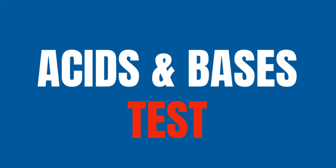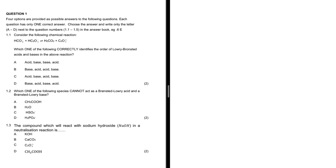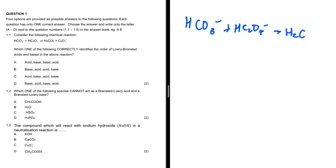Which one of the following correctly identifies the order of Brønsted-Lowry acids and bases in the above reaction? Our reaction is HCO₃⁻ plus HC₂O₄⁻ to give us H₂CO₃ plus C₂O₄²⁻.